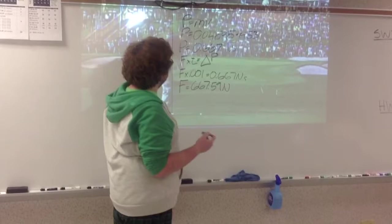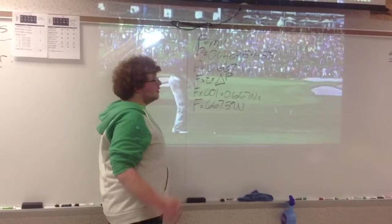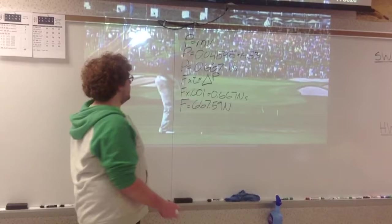So, then we do F times t equals delta P. So, F times 0.01, which is about what we estimated to be the amount of time between the ball and the club, set that equal to 0.667. And then from there, we got F equals 667.59 newtons.